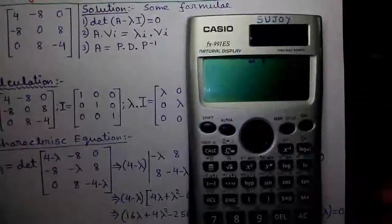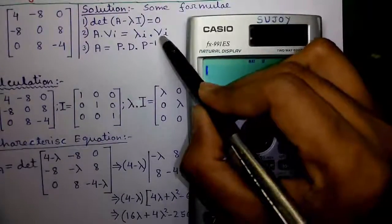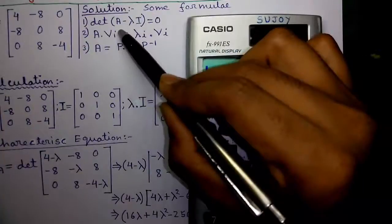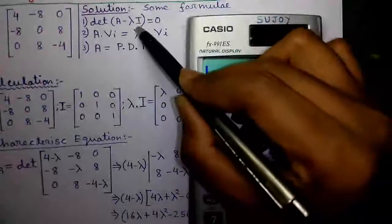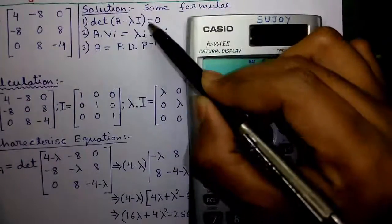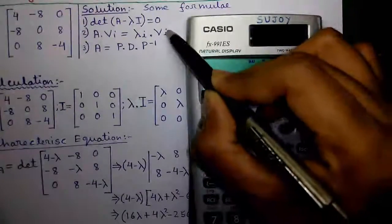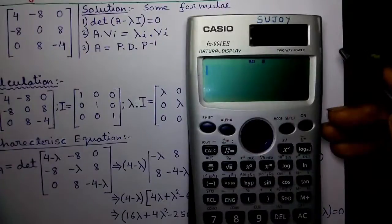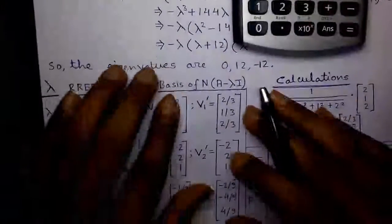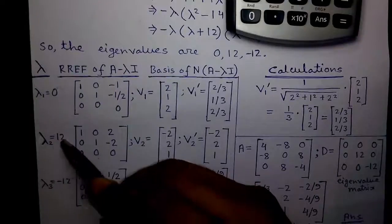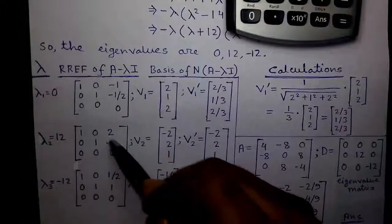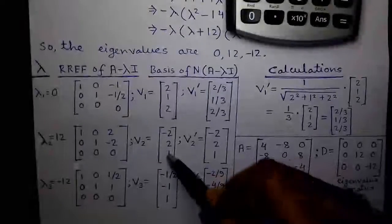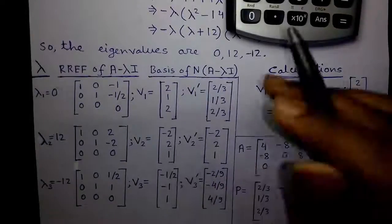Now I will show you the proof for the second formula, which is A into the eigenvector equals to the corresponding eigenvalue and its eigenvector, where Vᵢ on both sides are the same. Our second eigenvalue was 12, and the corresponding eigenvector was minus 2, 2 and 1. I have stored them in the calculator.